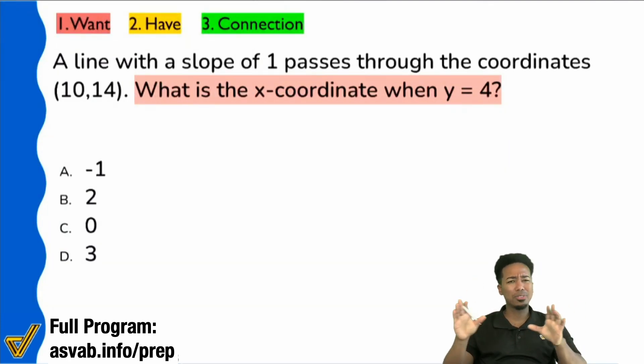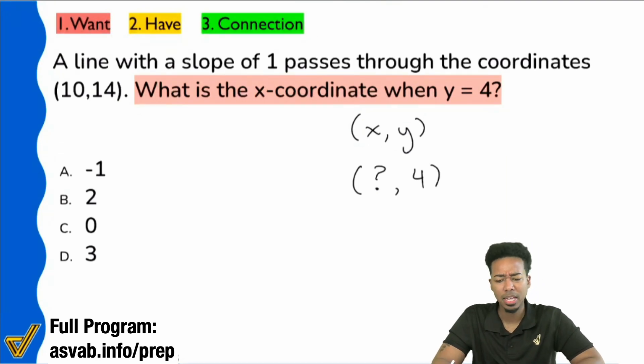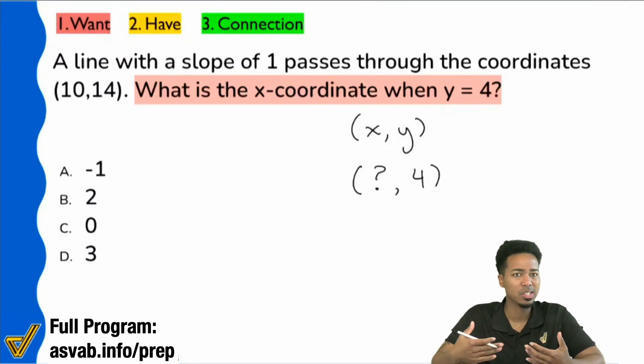So, all I gathered from that is just saying, hey, what I'm looking for is, if we're looking at it as x comma y, I'm looking for what this question mark is here when you have a 4 for the y. Is that true, everybody? We're looking for what that question mark is, what the x is when y is 4.